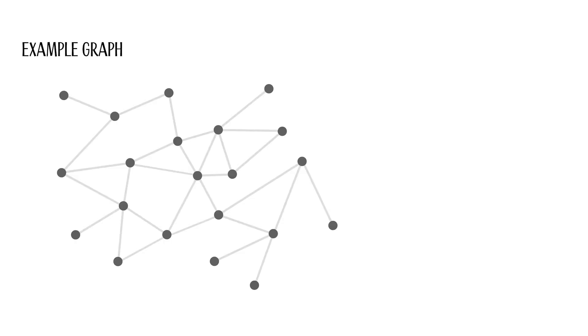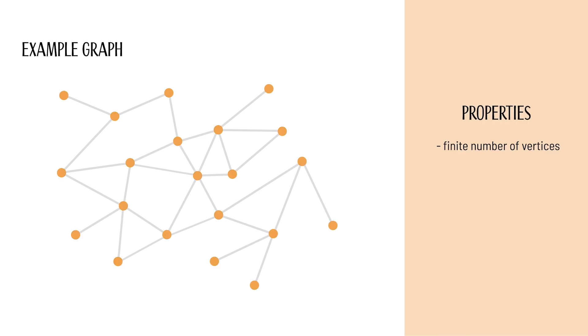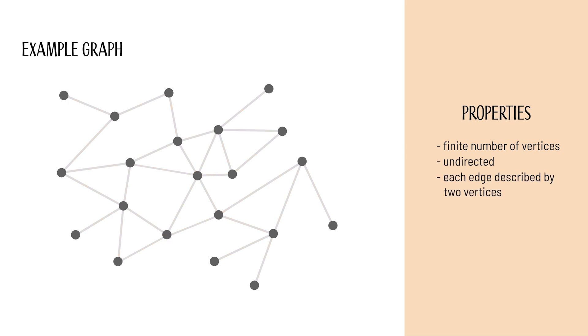Let us consider a simple graph first. It has the following properties: it has a finite number of vertices, it is undirected, and each edge is described by two vertices.